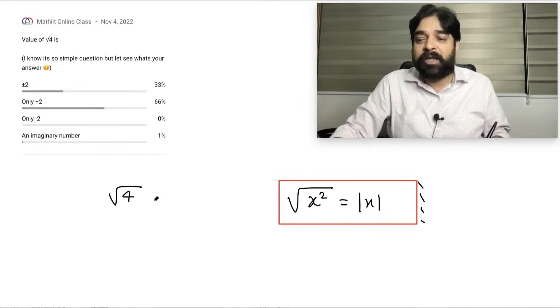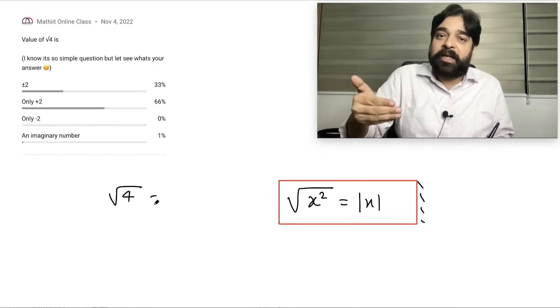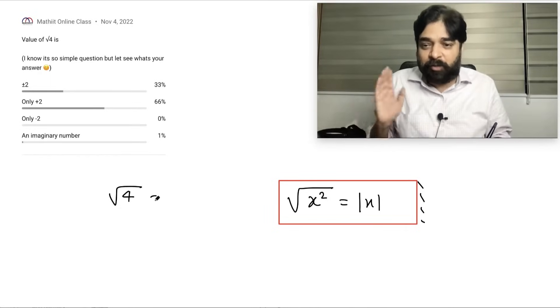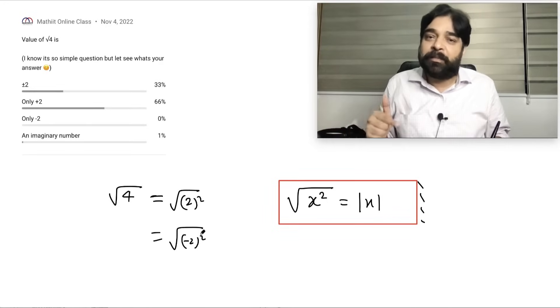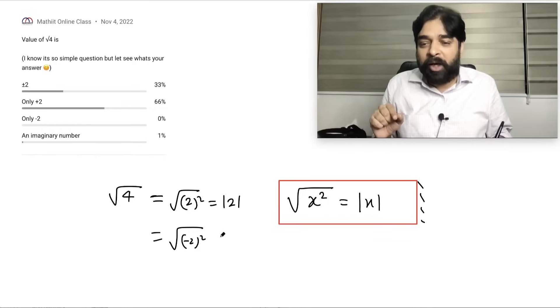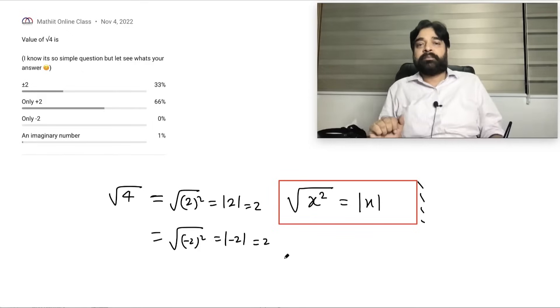So square root of 4 some people give the explanation why it is plus minus 2. This is sir square root of 4 I can write 2 square and this I can write root of minus 2 square also. So that is why it is plus minus 2. So no, if this is the case you will write mod 2 and here it will become mod minus 2 and both value will be 2 only. Got my point.